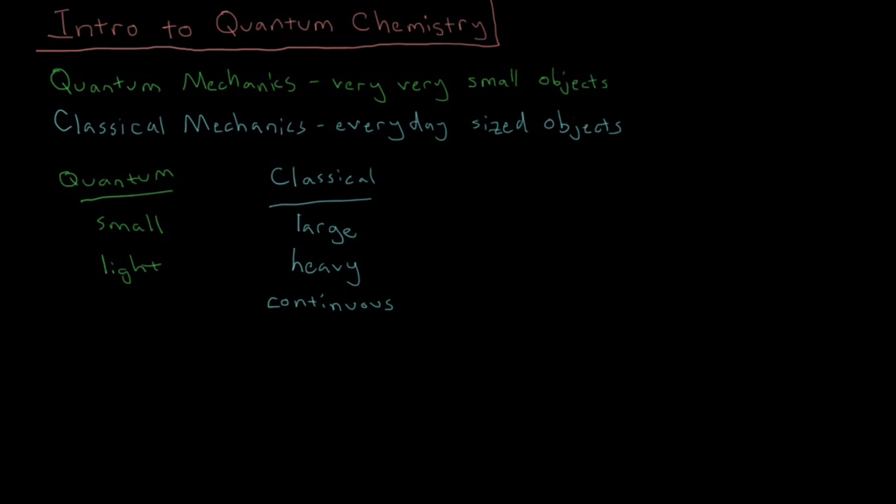Whereas in quantum mechanics, we have the opposite case, where there are only certain allowed values for variables. That is, they are discrete or quantized. And quantization is the base word of where quantum mechanics come from. Given that there are only certain allowed values of energy or position or momentum or all of those types of variables.